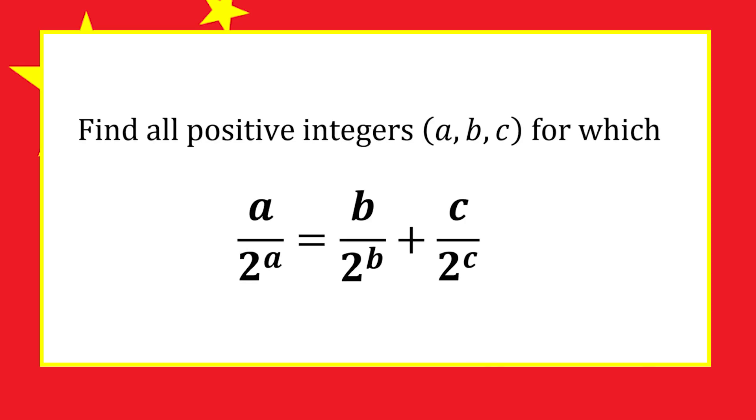The problem is to find all positive integers a, b, and c that satisfy this equation: a over 2 to the power a equals b over 2 to the b plus c over 2 to the c.